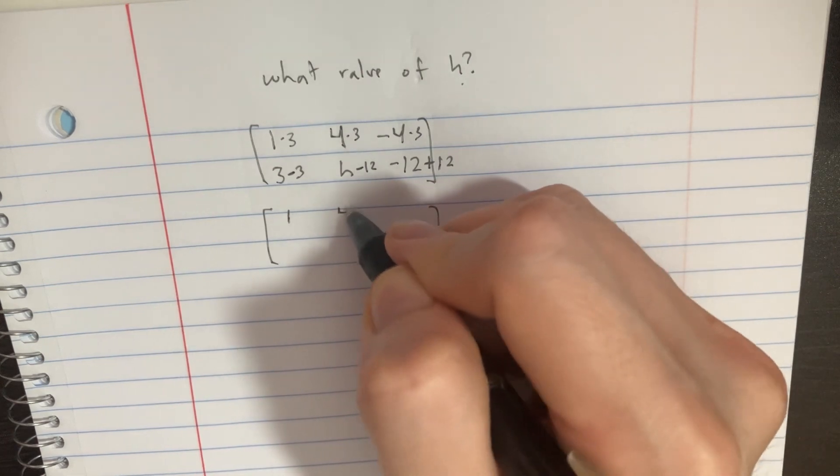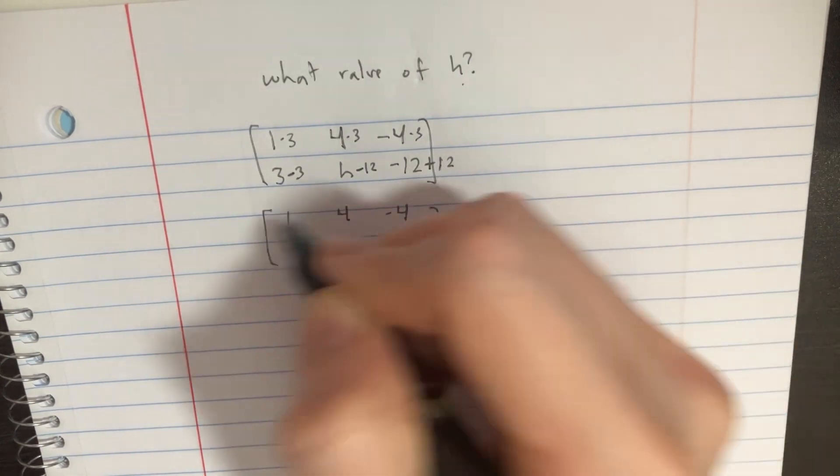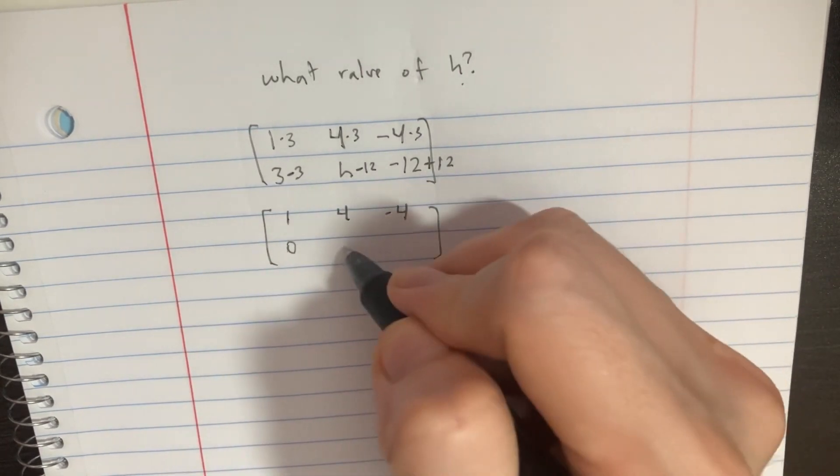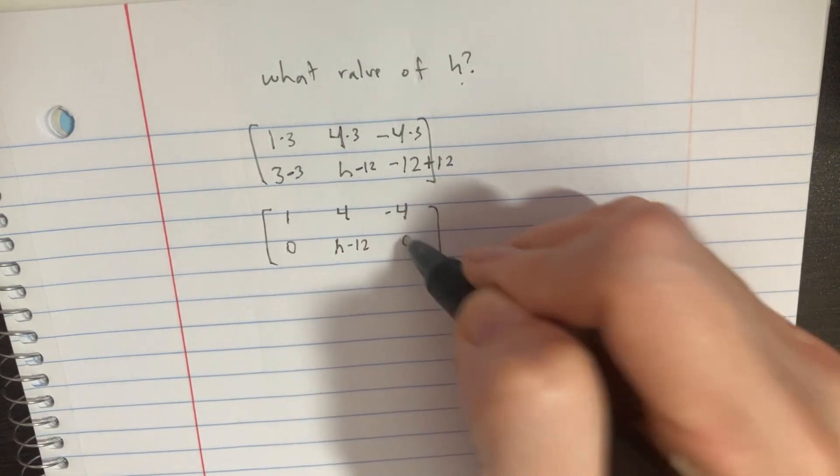So then here we could rewrite this row again, so we're actually not going to change it. But here we get the 0, h minus 12, and then a 0 over here.